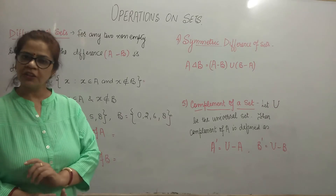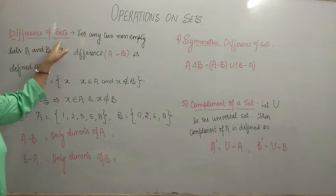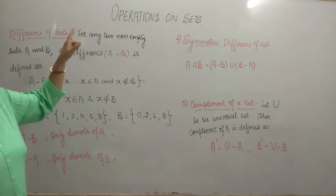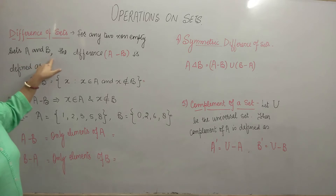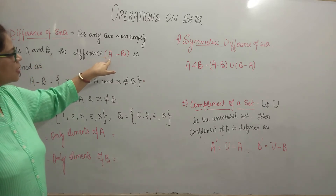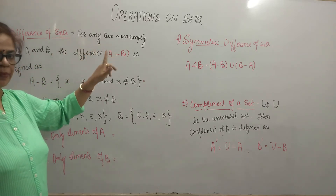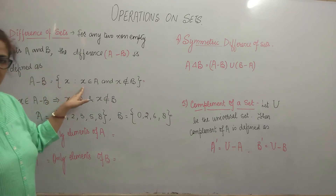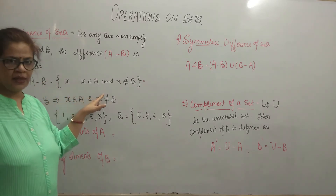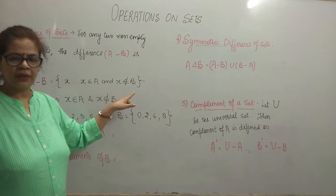Our third operation is difference of sets. We have two non-empty sets A and B. Then the difference of these two sets, A minus B, is defined as: X such that X belongs to A and X does not belong to B.